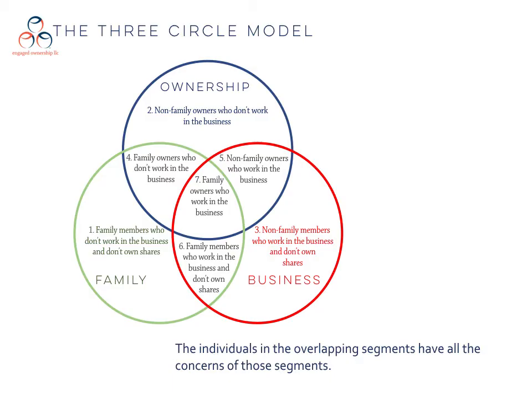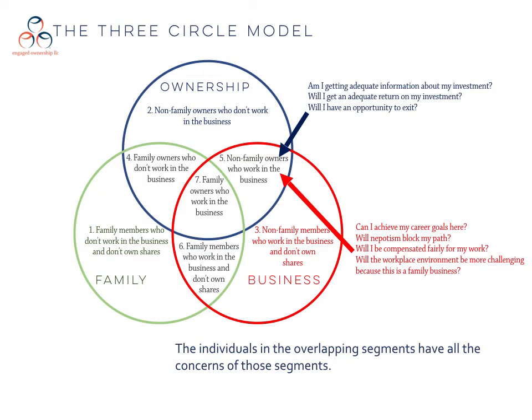Recognize that the individuals in the overlapping segments have all of the concerns of the circles that they're in. So for example, those in number five — non-family owners who work in the business — are concerned about ownership issues: will they get adequate information about their investment, an adequate return on their investment, and have an opportunity to exit? They will also be concerned about career issues like achieving their goals, concerns about nepotism, compensation, and workplace environment.